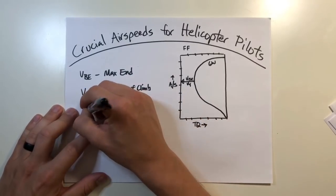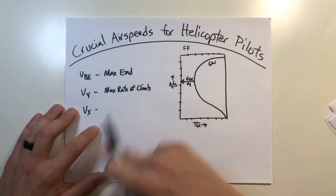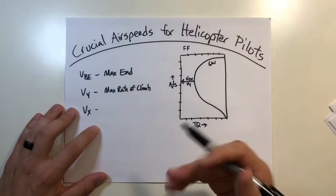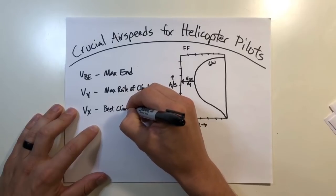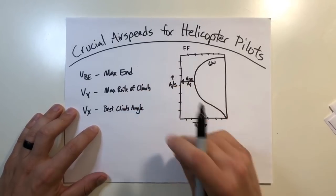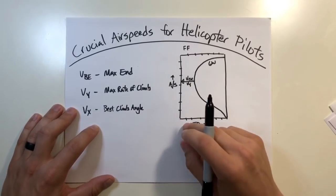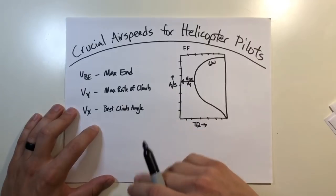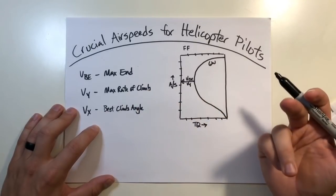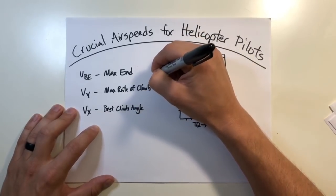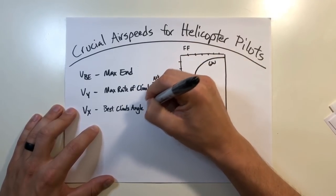So the next airspeed that we'll go over is VX. And this one can get a little bit confusing with max rate of climb if you don't really have a good handle on it. So VX is going to be your best climb angle. VX applies to a slightly different type of climb performance. VX offers the best climb angle, meaning that it yields the greatest altitude gain per a given distance, whereas max rate of climb is per a given unit of time. So what that means is this is your best altitude over time, and this is best altitude over distance.